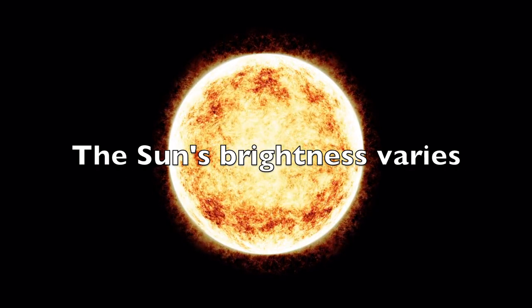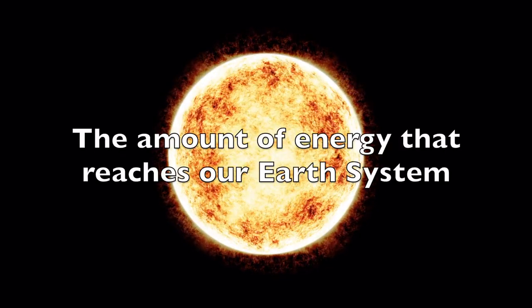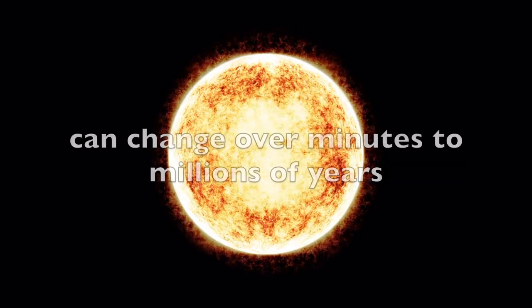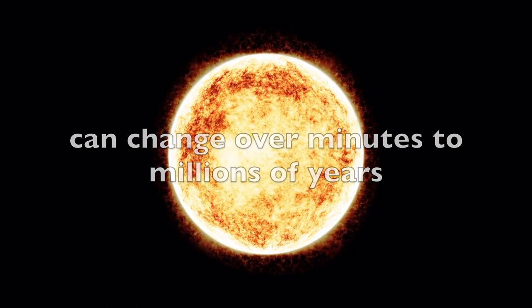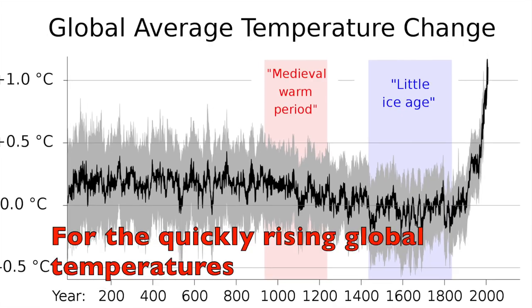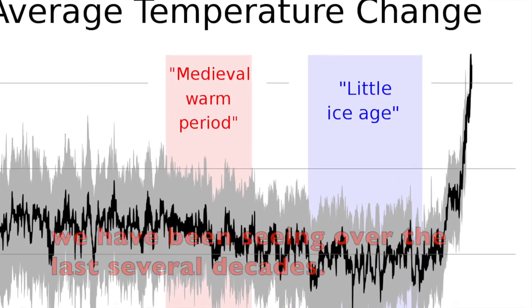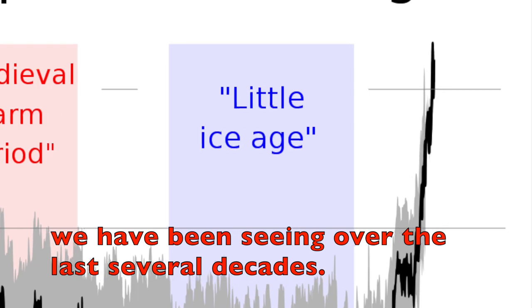The sun's brightness varies and the amount of energy that reaches our earth system can change over minutes to millions of years. There are several factors that can affect the energy coming from our sun. Some of these can affect our long-term climate over tens of thousands of years, but most of these natural variations are not responsible for the quickly rising global temperatures we've been seeing over the last several decades.